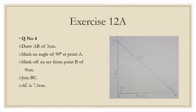After that, we have to keep our protractor, adjust our protractor at point A and mark an angle of 90 degrees.